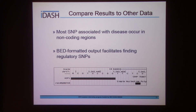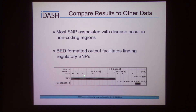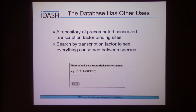We know now in biology that most SNPs — single nucleotide polymorphisms — that are associated with disease occur in non-coding regions, specifically near transcription factor binding sites. The same BED-formatted output lets you find regulatory SNPs. Here's a different HIF site, and there is a single nucleotide polymorphism.